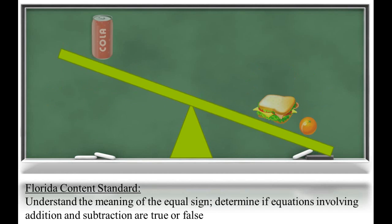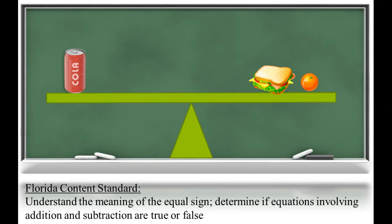How about these objects? Will they be balanced? Let's say the balance ends up like this. How would you describe this? The weight on the left side is the same as the weight on the right side. So we would say that the amounts are equal or balanced.